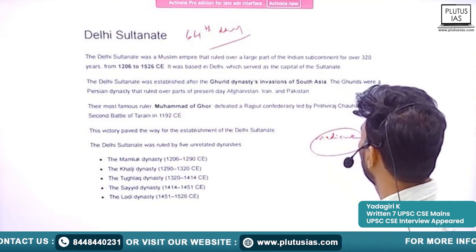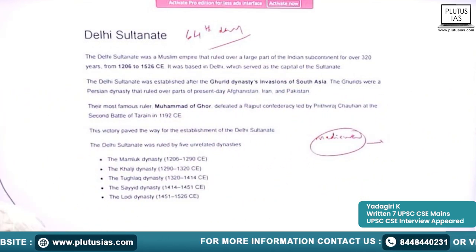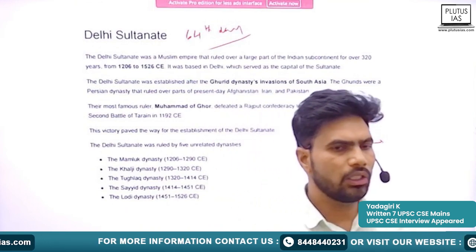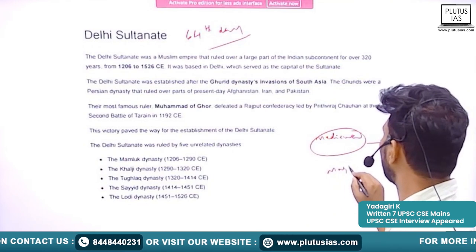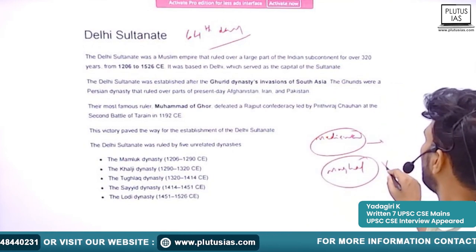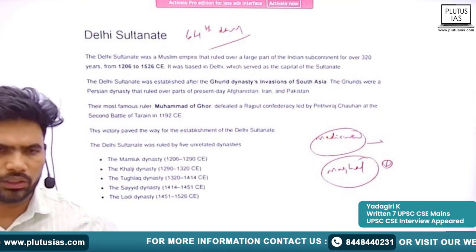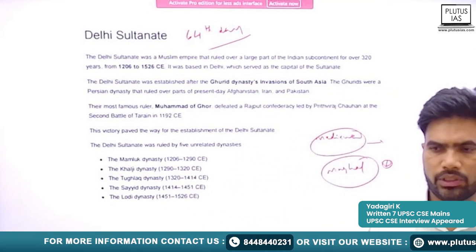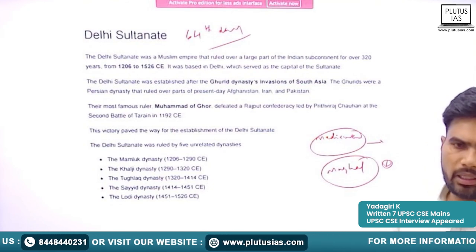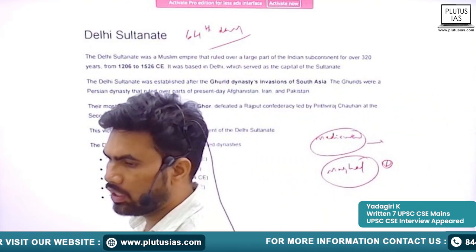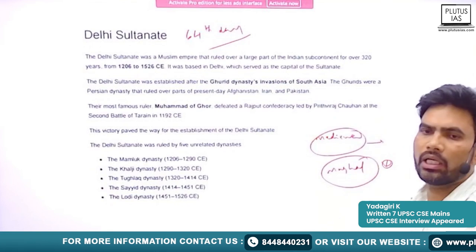Especially if we see two major periods: one is the rule during the Delhi Sultanate period, and the next is the Mughal dynasty. Mughals are very important. After that, we enter into the modern age, where we will see the arrival of the Britishers. In medieval India, there are other kingdoms like the Vijayanagara Empire, the Kakatiyas, the Yadavas, the Bahmani Kingdom, and even certain regional kingdoms like Bengal and Gujarat.